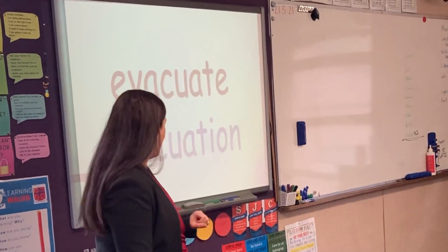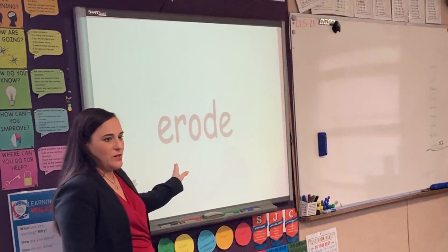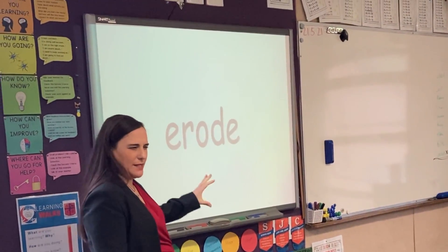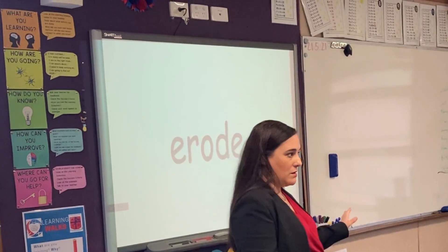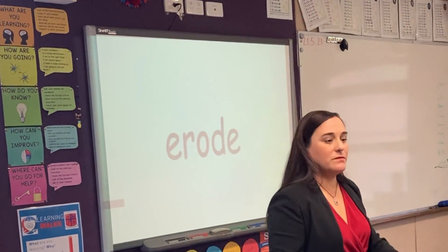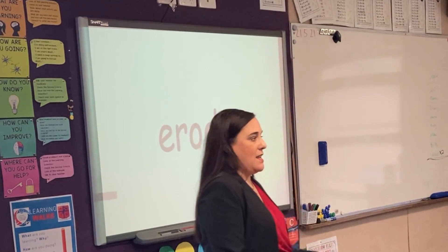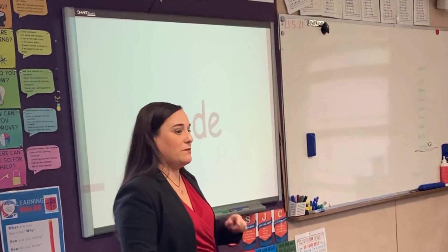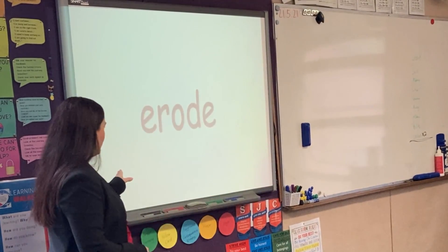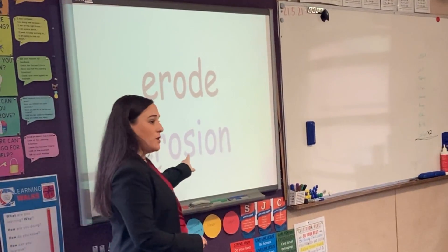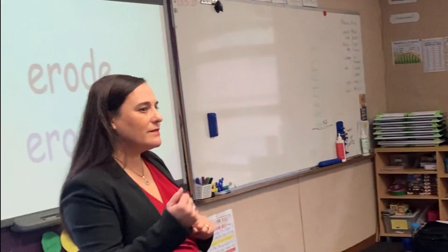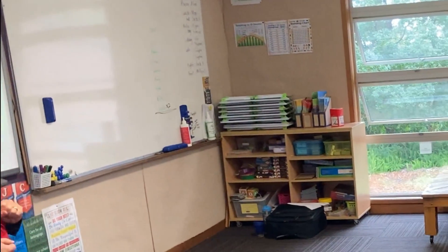I'll show you another word. What's this word here? Is it a verb or is it a noun? It's a verb — it's telling me that something is happening, like an action. So I can turn it into a noun, and if I do, I need to use the suffix I-O-N. Can you see the I-O-N? What letter comes before that? The letter S. That's interesting, isn't it?